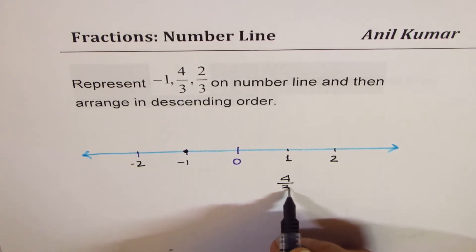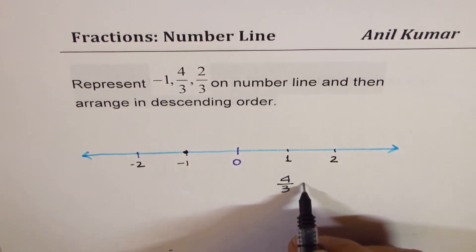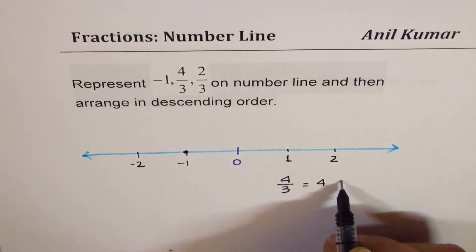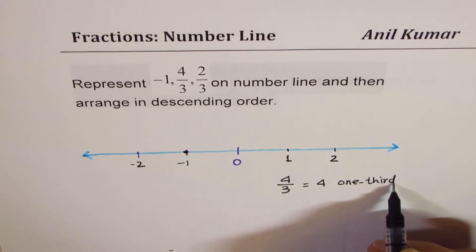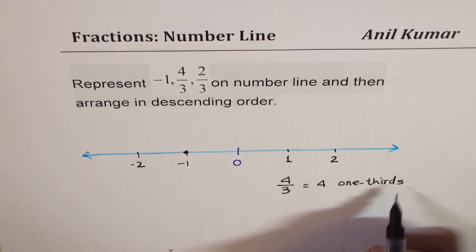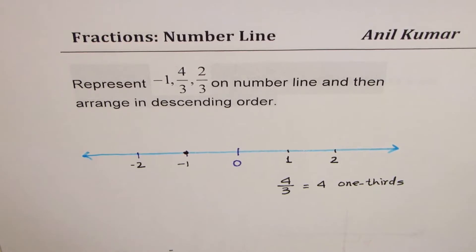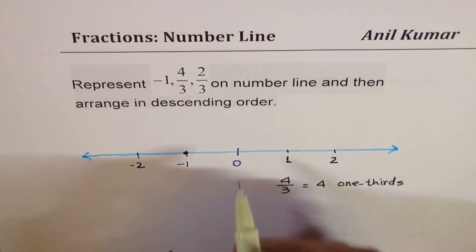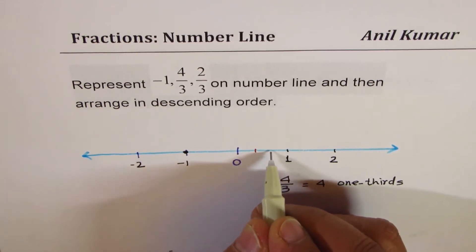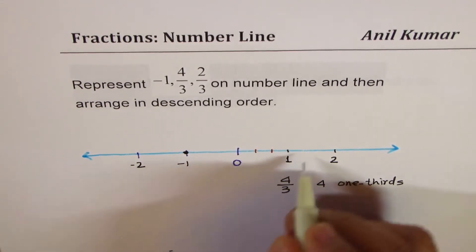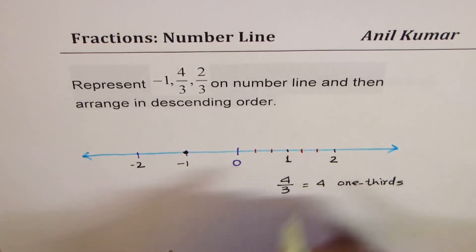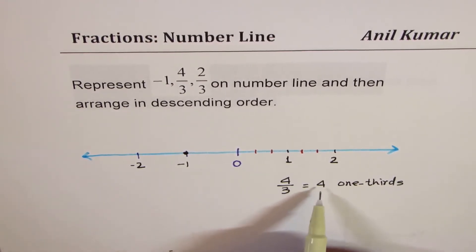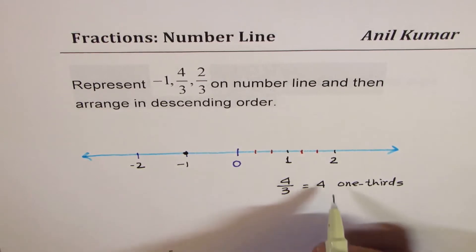I'm trying to represent 4/3, which means 4 one-thirds — you can think of it like this. To get 4/3, we divide 1 unit into 3 equal parts. Here are 3 equal parts; let me also divide the second unit into 3 equal parts.